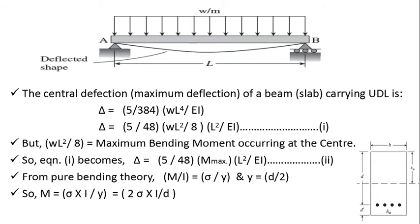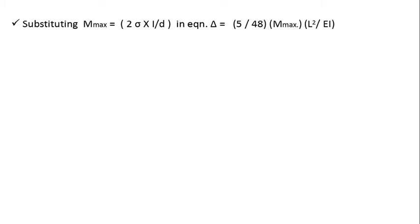So when I cross multiply, M becomes σI/y. And when I substitute y = D/2, it becomes 2σI/D, that is 2 times bending stress into moment of inertia divided by effective depth. Substituting M_max = 2σI/D in equation Δ = (5/48) M_max L²/EI, we get Δ = (5/48) (2σI/D) (L²/EI).